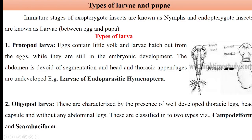Coming to the types of larvae — first is protopod larvae. This type of larvae has less egg yolk content in their eggs, so they hatch out early in the embryonic stage only. The segmentation you can see in the head region and abdominal region is not well distinct, and the thoracic appendages are undeveloped. This type of larvae is found in the case of larvae of endoparasitic Hymenoptera.